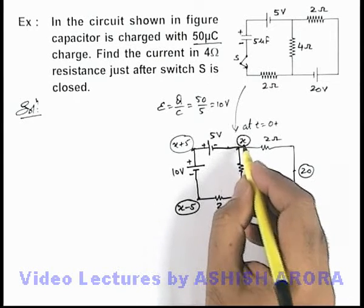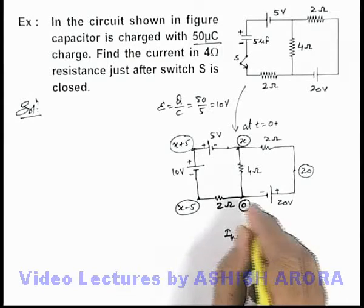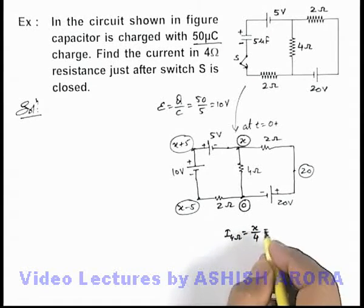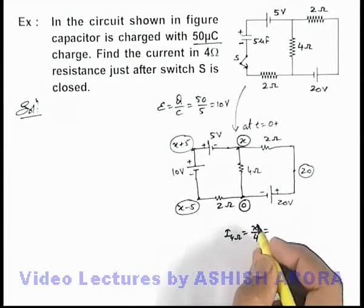If we are able to calculate the value of x directly, we can say current in 4 ohm resistance will be x minus zero by 4. So let us first calculate the value of x, and obviously after that we get the value of current in 4 ohm resistance.